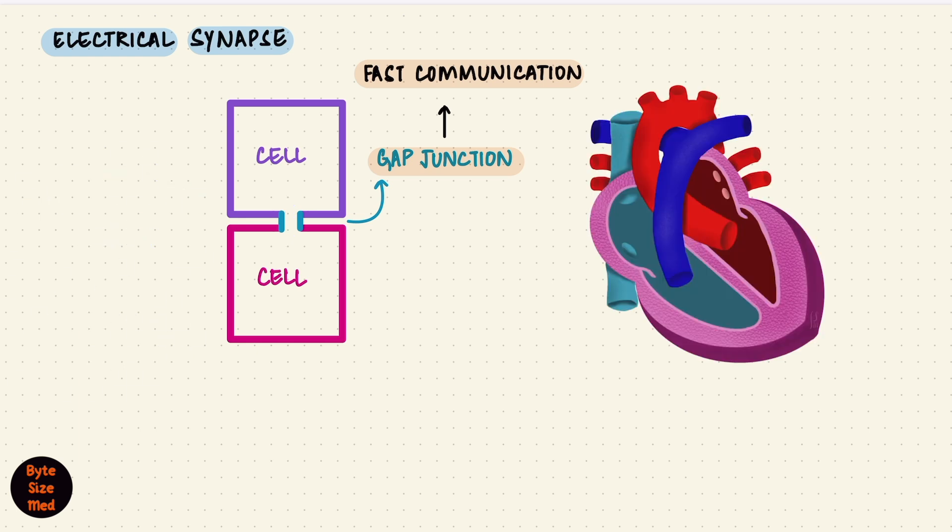The heart. The contractile cells of the heart are connected by gap junctions. Ion currents can rapidly move between all the cells, ensuring they contract together as a syncytium. Thus all the contractile cells of the ventricles contract together to pump blood out through those great vessels. That kind of fast communication is thanks to these gap junctions.